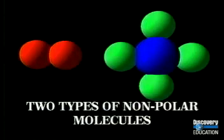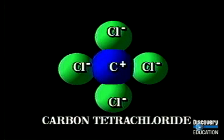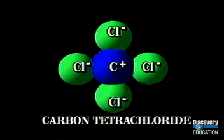Non-polar molecules can be formed in two ways. Some are formed when all atoms in a molecule have an equal attraction to the shared electrons, such as in oxygen or chlorine molecules. Others are non-polar because the structure of the molecule will not allow poles to form — for instance, in carbon tetrachloride, the chlorine atoms have a stronger attraction to the shared electrons, but due to the molecule's structure all the negatively charged chlorine atoms are on the outside surrounding the carbon atom, so no poles can form.